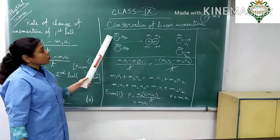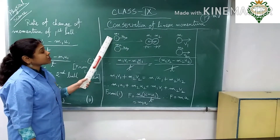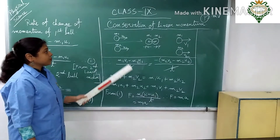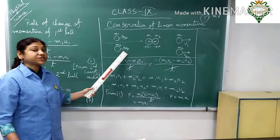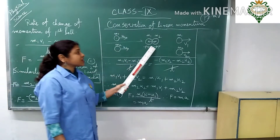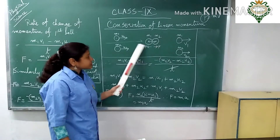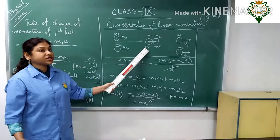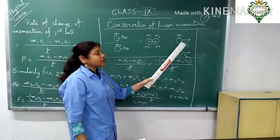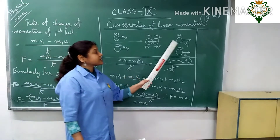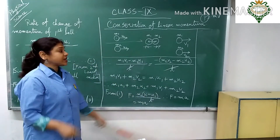Consider two balls. The mass of the first ball is M1 and the mass of the second ball is M2. The initial velocity of the first ball is U1 and the initial velocity of the second ball is U2. After collision, the first ball has mass M1 and final velocity V1, and the second ball has mass M2 and final velocity V2. The force on the first ball is positive F (in the direction of motion) and on the second ball is minus F (in the opposite direction).